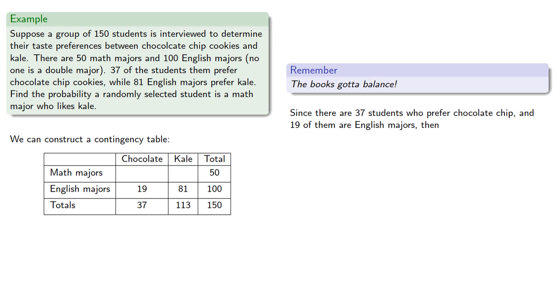Now we notice that there are 37 students who prefer chocolate chip. We've identified 19 of them are English majors, and so the rest must be math majors. Since there are 50 math majors, and 18 of them prefer chocolate chip, then 50 minus 18 equals 32 should prefer kale.